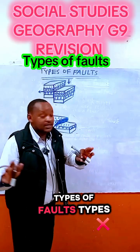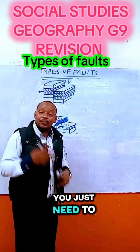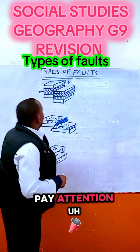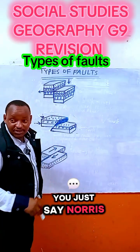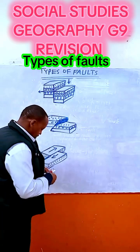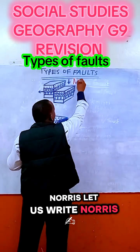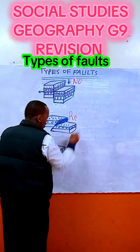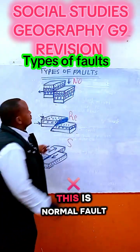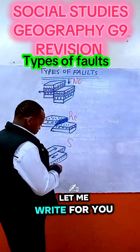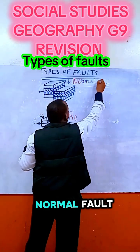Types of faults. This is very simple, you just need to pay attention. You just say 'NRS' — N stands for 'No more fault', which is the Normal fault.